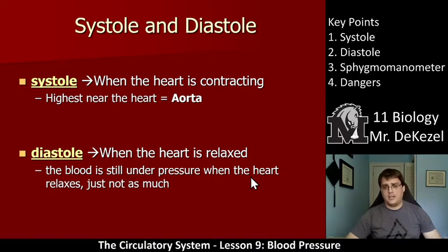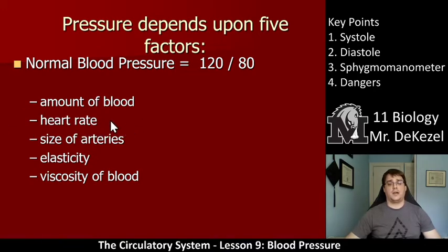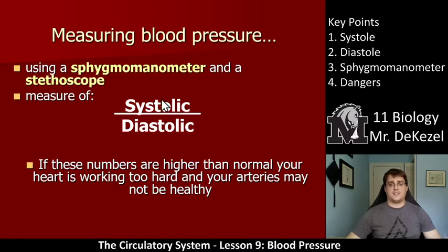We often measure blood pressure on our arm. Normal blood pressure is 120 over 80 — that's 120 systolic over 80 diastolic. It depends on a whole bunch of factors: the amount of blood within your vessels, how fast your heart is beating and how much time it has to relax, the size of the arteries, the elasticity of those arteries — whether they're stretchy or stiff — and also the consistency or viscosity of blood, whether it's thick like syrup or more like water.